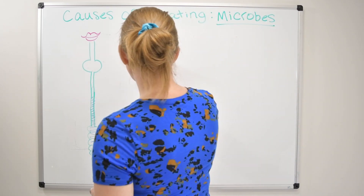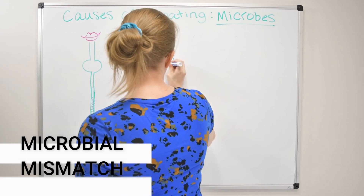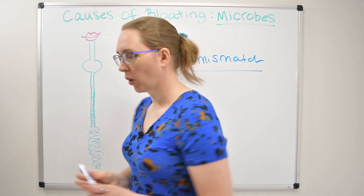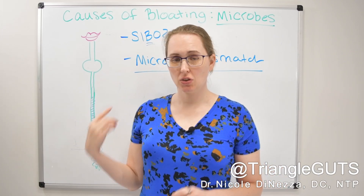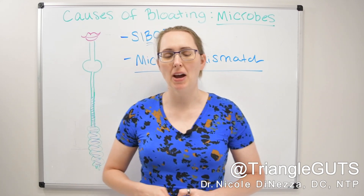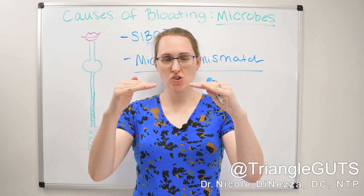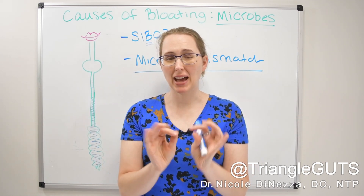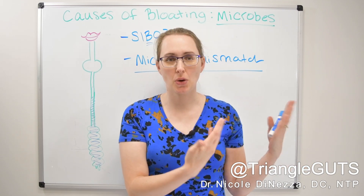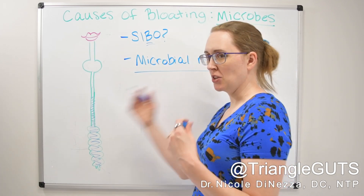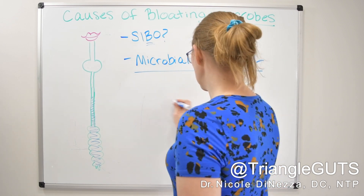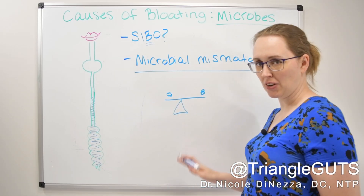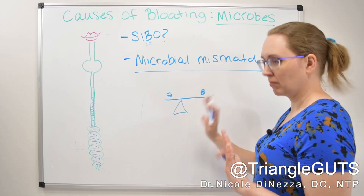Number two is what I would call a microbial mismatch, and I think this is quite a bit more common — even common within the world of SIBO. You can think about the microbiome like a seesaw, where there's a ratio of good and bad bacteria. As long as they're in some kind of balance, everybody's happy. But if that balance gets thrown out of whack, then things start to go south. So if you think about a mismatch between your food and your microbes, it will often present itself in a very specific way.